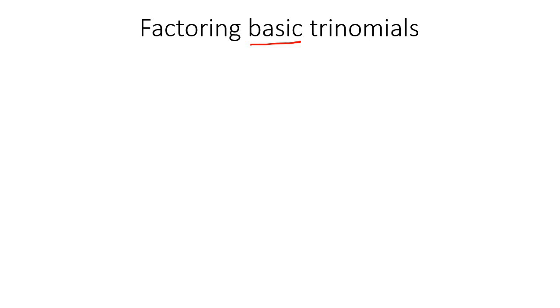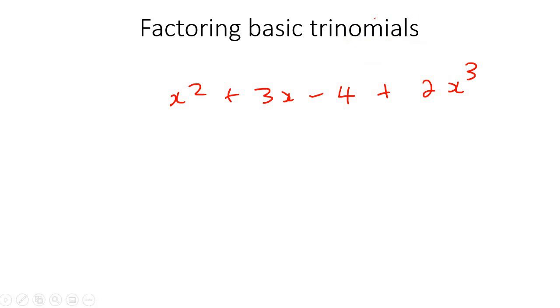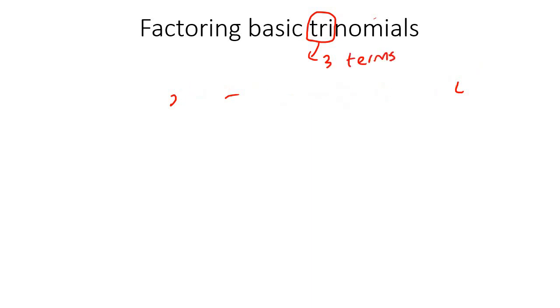So what is a trinomial? Let's break down the word. We know what nomials are - like polynomials and monomials - it's just things with x's, algebra. But the 'tri' part means that there are three terms. Three terms.